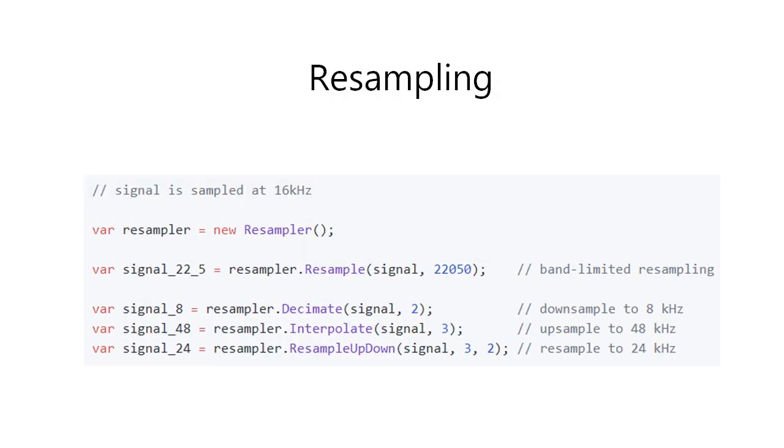Resampling. For simple decimation, interpolation, up-down resampling, use corresponding methods, and they will work faster. The method named simply resample carries out the band-limited resampling, which is universal and will work for any sampling rate ratios. All methods use anti-aliasing low-pass filtering under the hood. By default, the low-pass filter is designed automatically inside the routines, of order 101, but you can specify your own anti-aliasing filter as the last parameter.